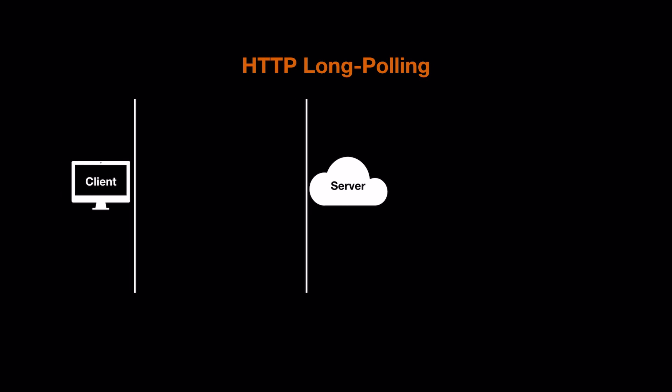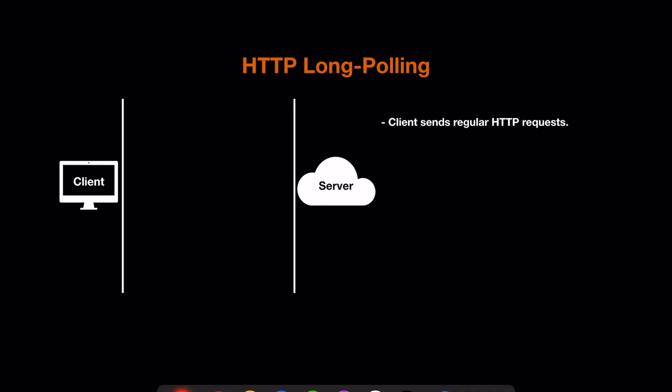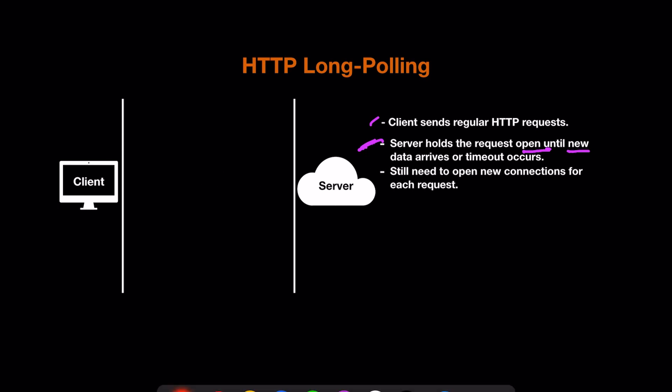In HTTP long polling, the client sends a regular HTTP request just like in polling, but the difference is the server holds the request open until new data arrives or a timeout occurs. The server does not send an immediate empty response — it waits for data to arrive, and as soon as data arrives for that specific client, the server returns the response. You still need to open a new connection for each request.